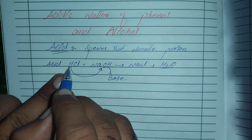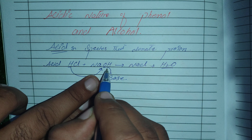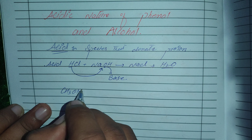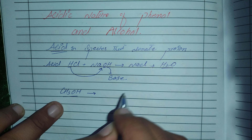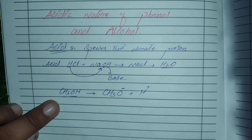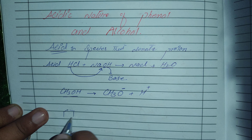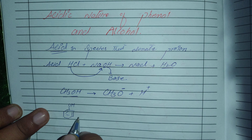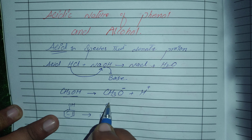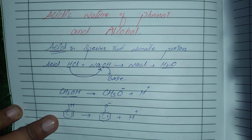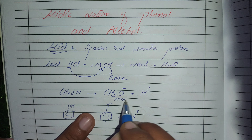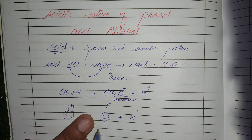When methanol (CH3OH) dissociates, it produces CH3O⁻ (methoxide) and H⁺. Another example is phenol — a benzene ring containing a hydroxyl group OH — which dissociates to produce phenoxide (O⁻) and H⁺. So here we have two species: methoxide and phenoxide.